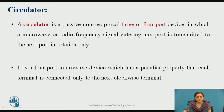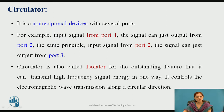A circulator is a passive non-reciprocal 3 or 4 port device in which a microwave or radio frequency signal entering any port is transmitted to the next port in rotation only — it will not reverse the direction of the input port. It is a non-reciprocal device with several ports, meaning it can have n number of ports.